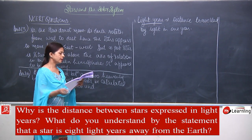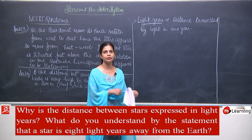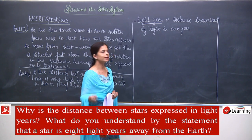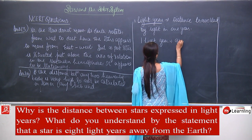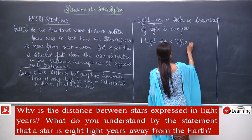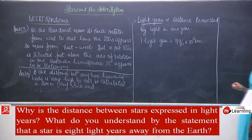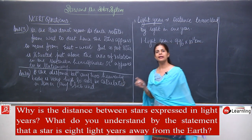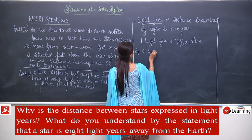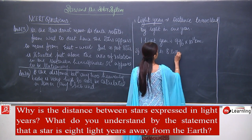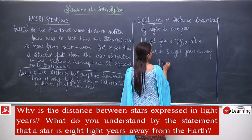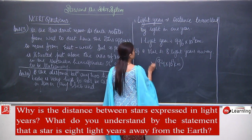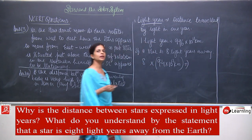Now the next part: what do you understand by the statement that a star is eight light years away from the earth? One light year is equal to 9.46 × 10^12 kilometers. If a star is eight light years away, then it will be 9.46 × 10^12 kilometers multiplied by 8. Whatever the answer comes will be the answer for this question.